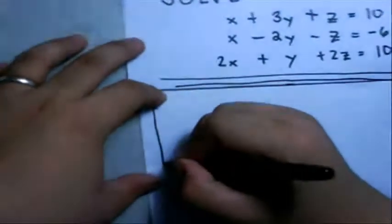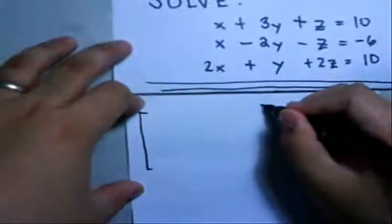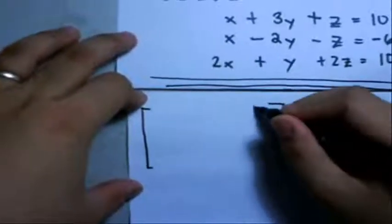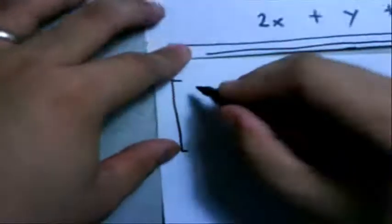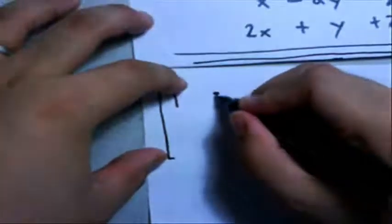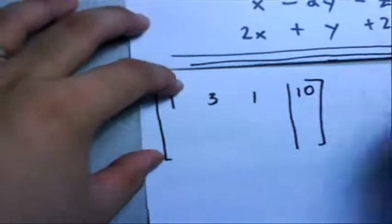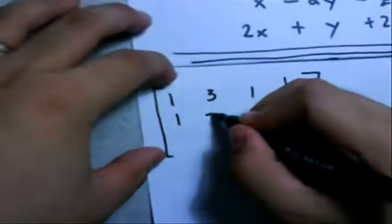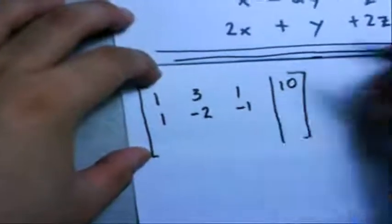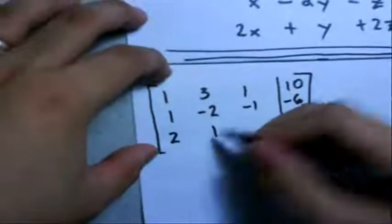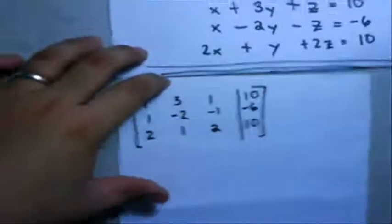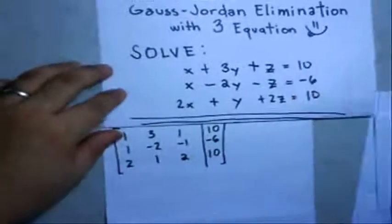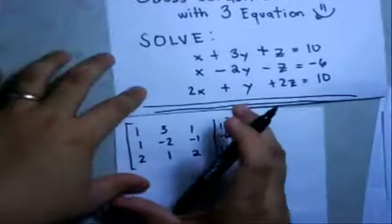Depending on their coefficients, you just put them here: 1, 3, 1, 10 | 1, negative 2, negative 1, negative 6 | 2, 1, 2, 10. The objective of Gauss-Jordan elimination is to convert this matrix into an identity matrix.